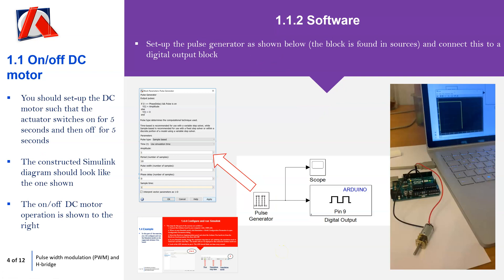In terms of the software we're going to embed onto the microchip, we've got the pulse generator — the same as the LED. We're applying an amplitude of 1. The period is 10 samples, and the sample time is 1, so the period is 10 seconds. The pulse width is 5 samples, meaning we're applying amplitude of 1 for 5 seconds. I've also got a scope so I can look at the input being applied and removed to pin 9.